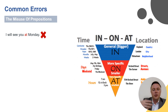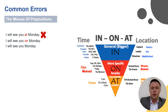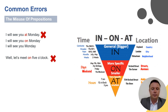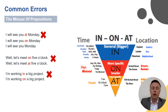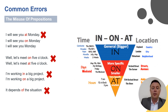Common preposition misuse: 'I will see you at Monday' should be 'I'll see you on Monday' — though people often shorten it to just 'I'll see you Monday.' 'Let's meet on five o'clock' should be 'let's meet at five o'clock.' 'I'm working in a big project' should be 'I'm working on a big project' — you can work 'in a big team' because 'in' implies inside, but it's 'on' for a project. And 'it depends of the situation' should be 'it depends on the situation.'